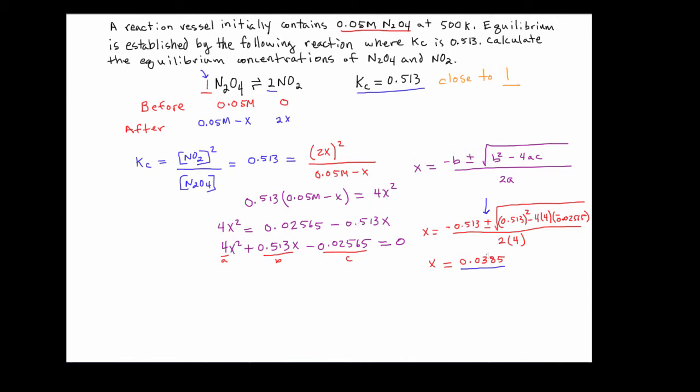Now we're not done. Let's go back and figure out our equilibrium concentrations. So the N2O4 is equal to 0.05 molar minus x. So to find the N2O4, we need to take 0.05 molar and we need to subtract 0.0385. And so the N2O4 at equilibrium is going to equal 0.0115 molar.